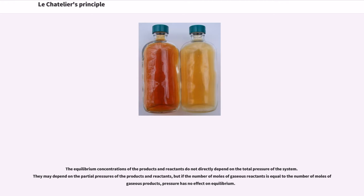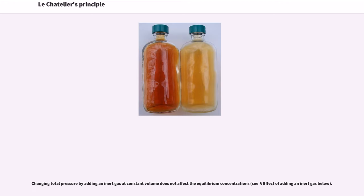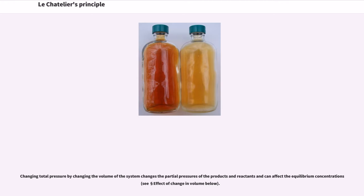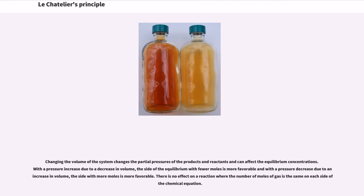The equilibrium concentrations of the products and reactants do not directly depend on the total pressure of the system. They may depend on the partial pressures of the products and reactants, but if the number of moles of gaseous reactants equals the number of moles of gaseous products, pressure has no effect on equilibrium. Changing total pressure by adding an inert gas at constant volume does not affect the equilibrium concentrations. Changing total pressure by changing the volume of the system, however, does change the partial pressures and can affect the equilibrium concentrations. With a pressure increase due to a decrease in volume, the side with fewer moles is more favorable; with a pressure decrease due to an increase in volume, the side with more moles is more favorable. There is no effect on a reaction where the number of moles of gas is the same on each side of the chemical equation.